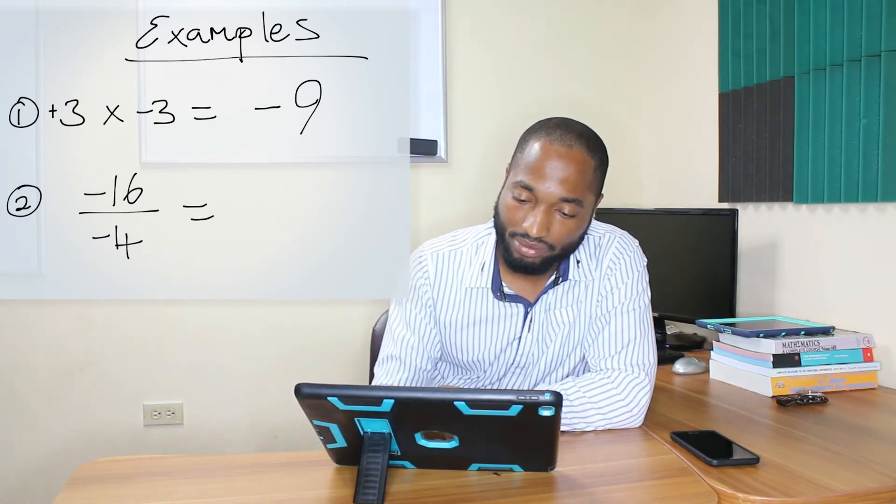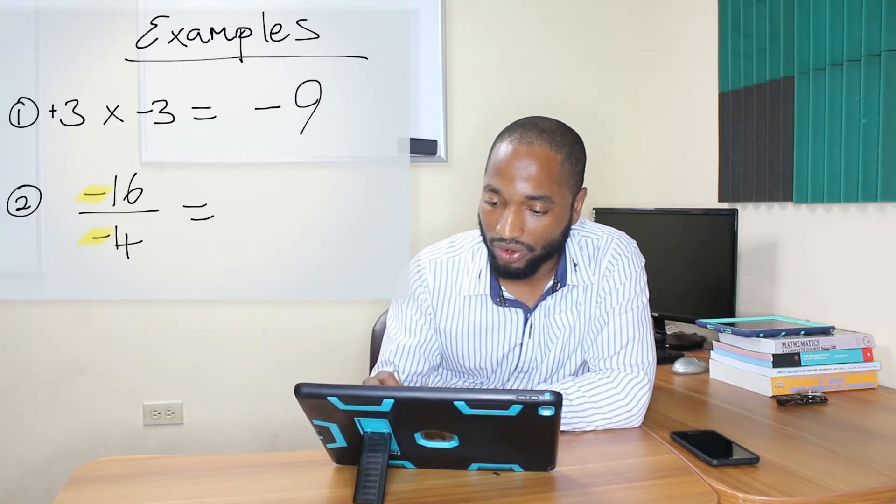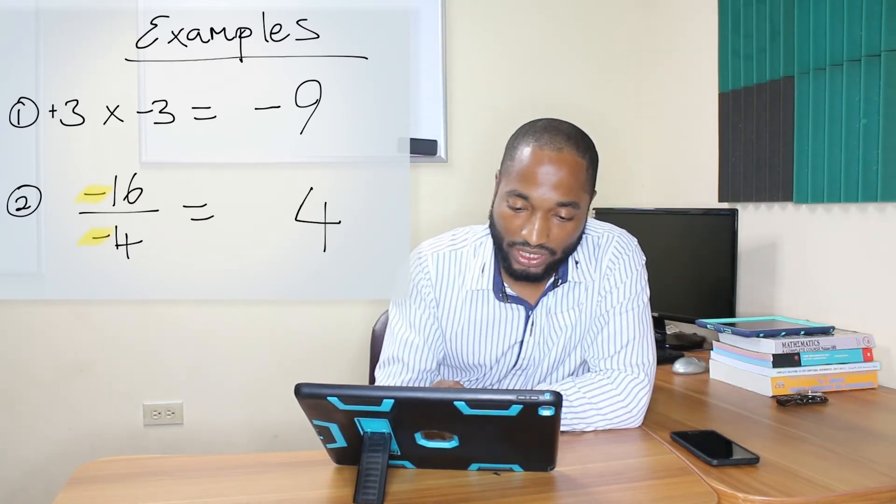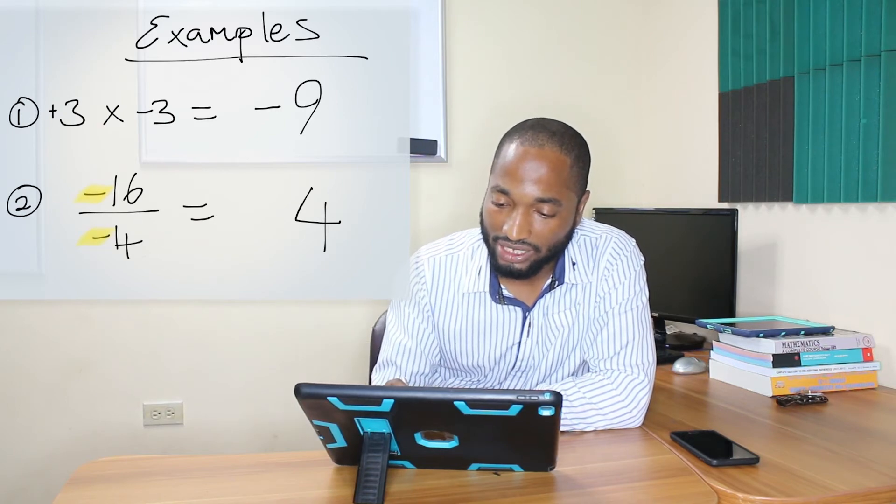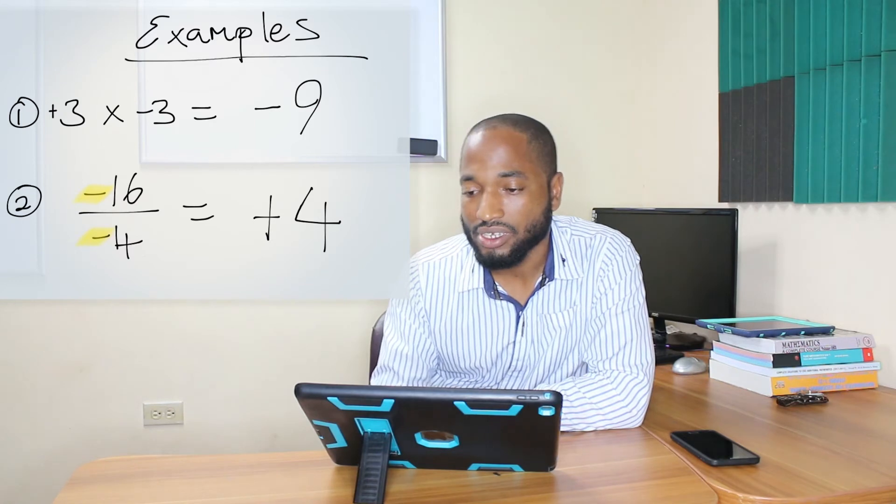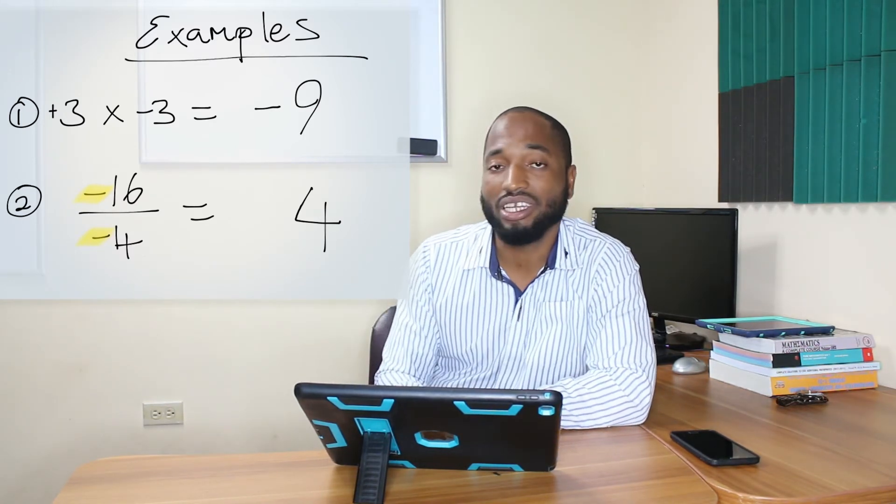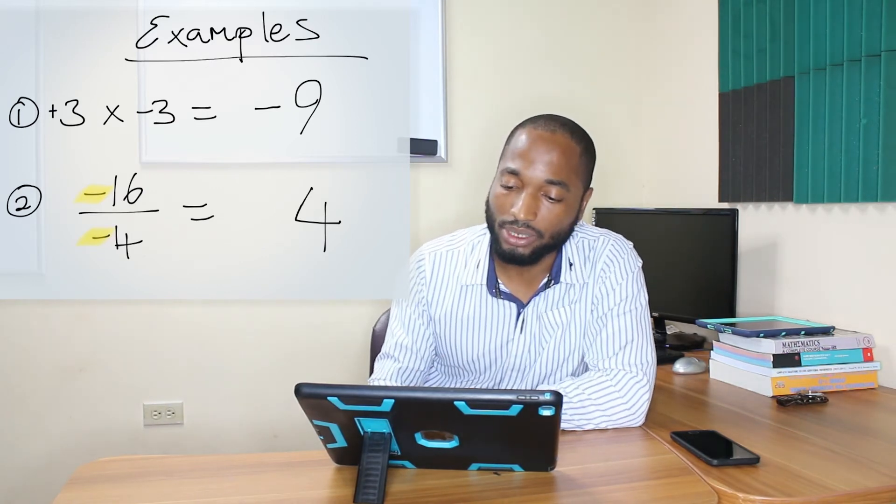Next question. Negative 16 being divided by negative 4. 16 divided by 4 is 4. But because the signs are the same, the answer would be positive. Now the thing with positive signs, you could actually leave them out. You can leave them out of the answer and it will be assumed as positive.